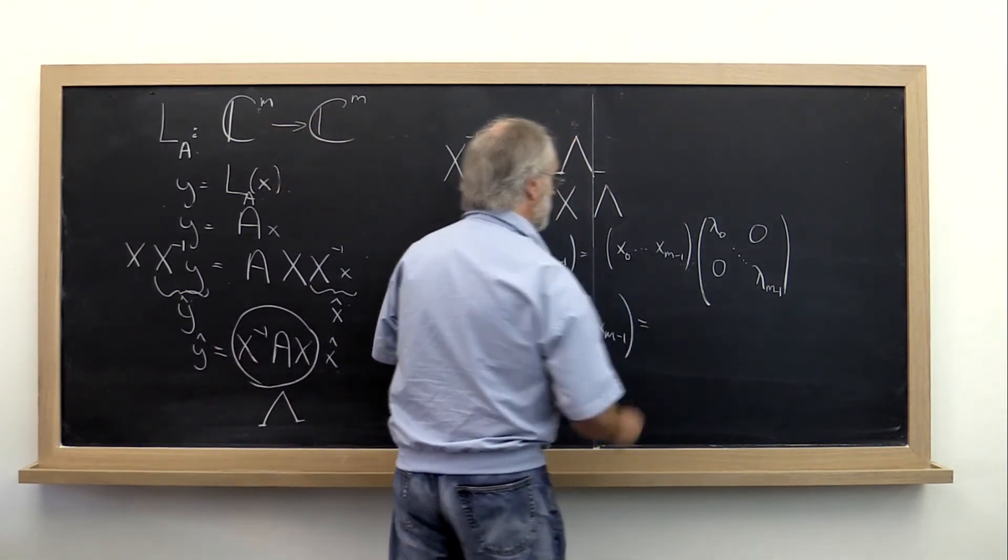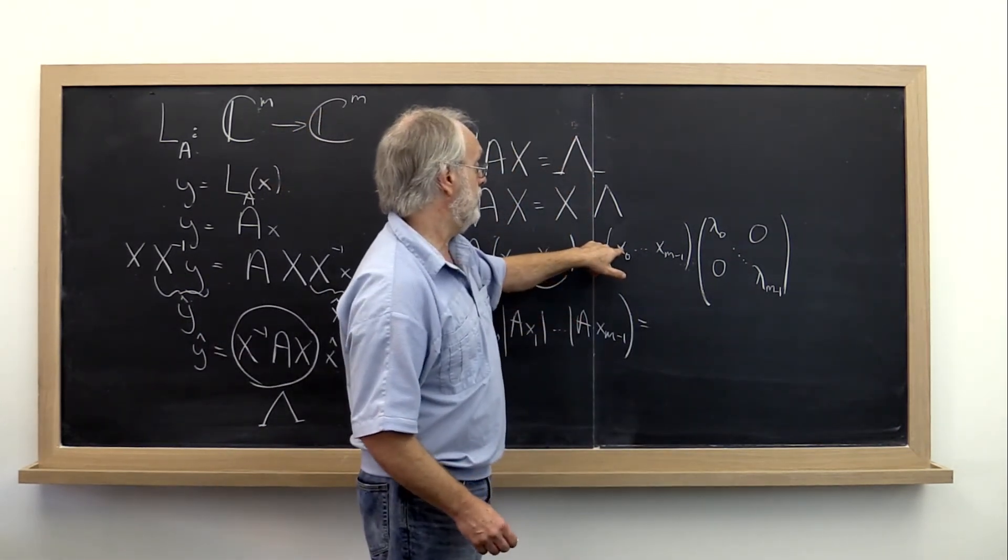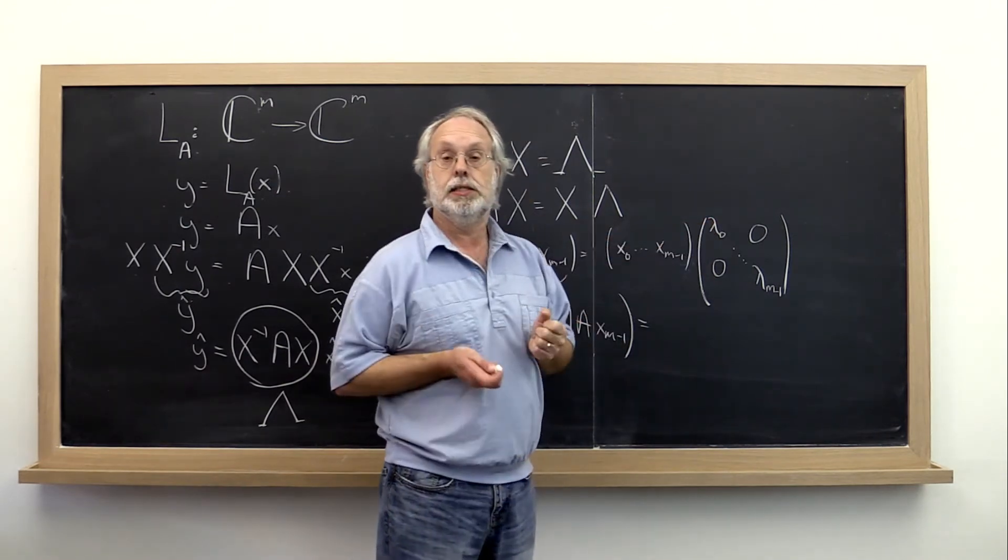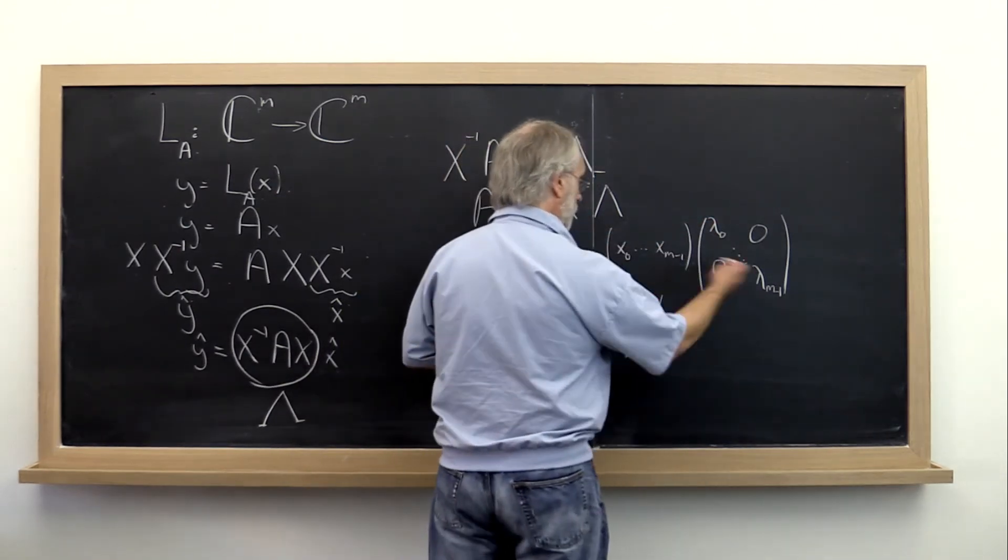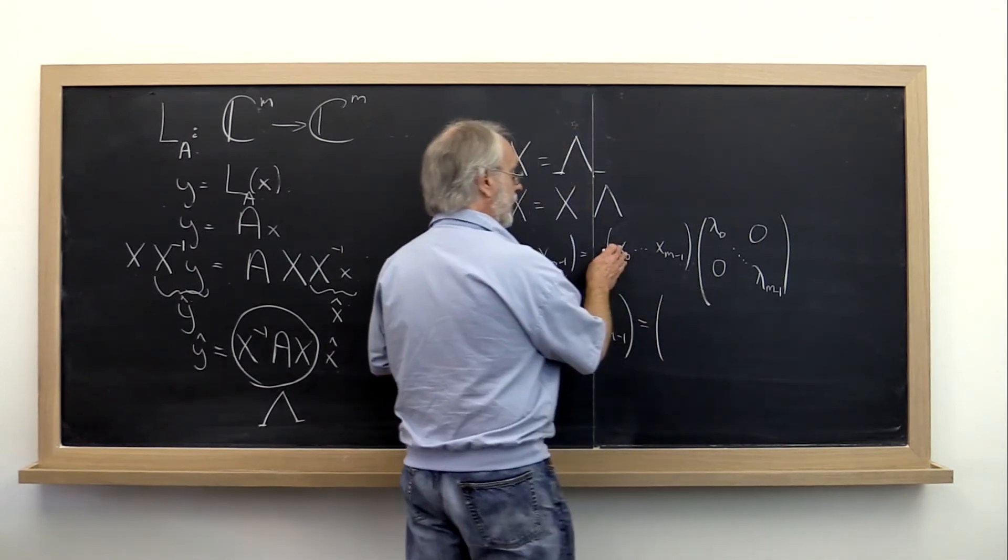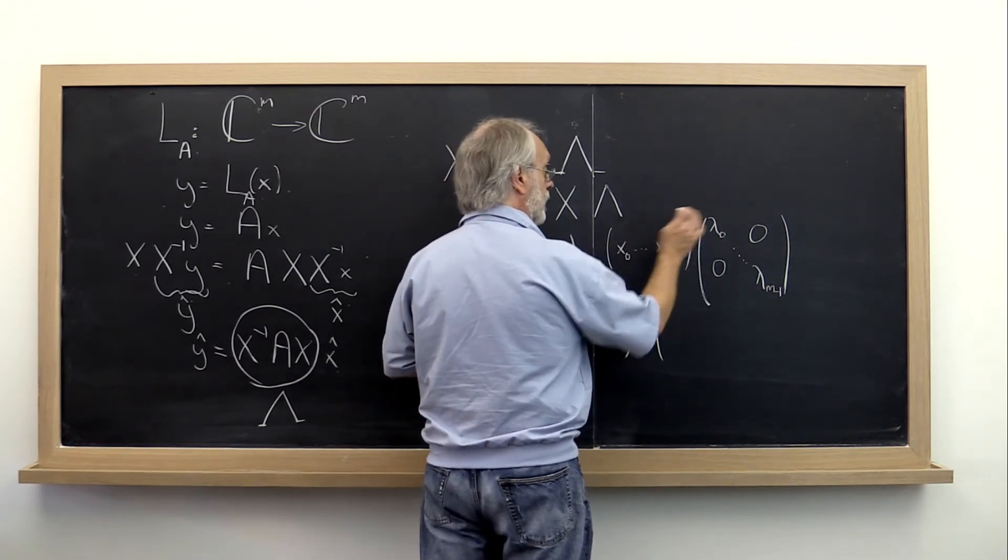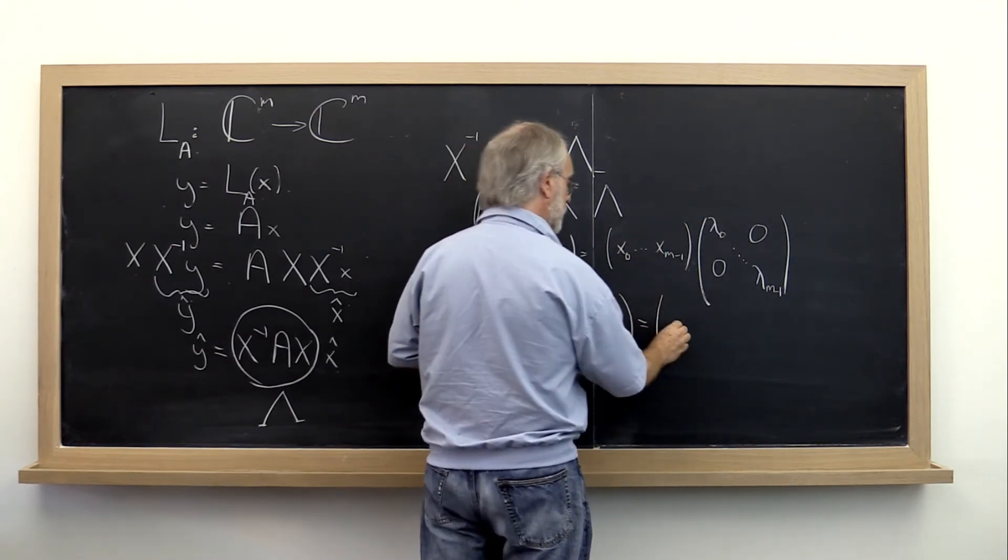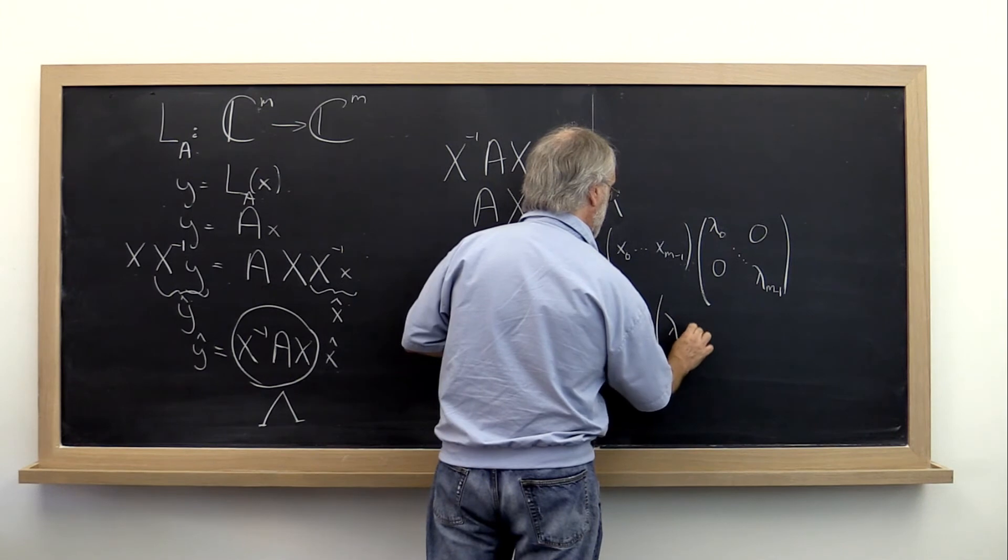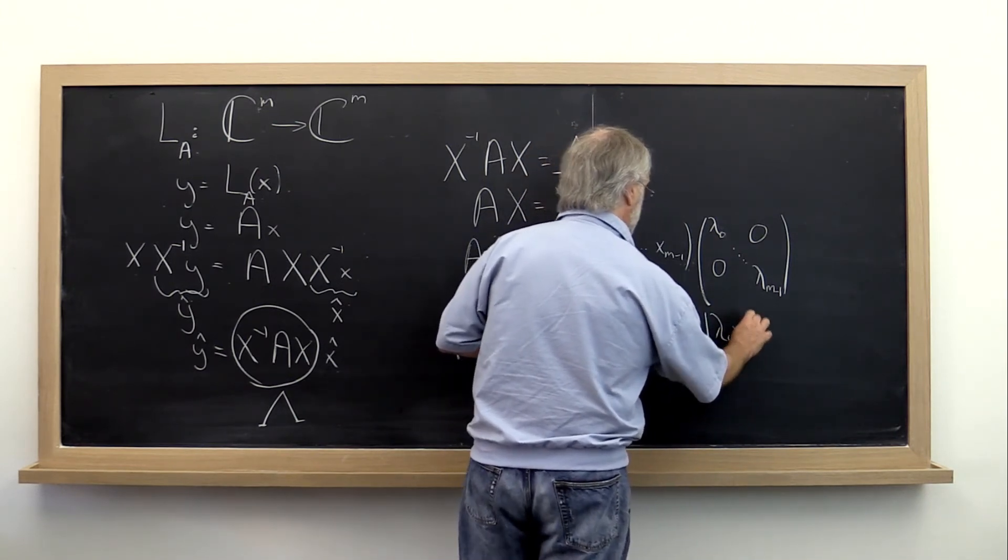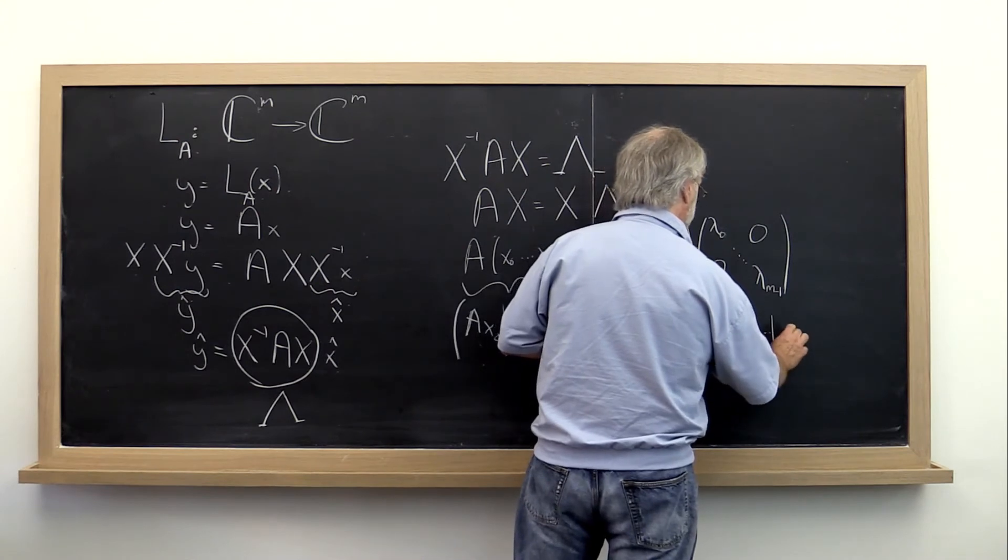On the right we see that the first column is this times that plus zero times blah blah blah. And therefore the first column on the right ends up being x0 times lambda 0. But notice that the vector times a scalar is the same as the scalar times the vector. So we get lambda 0 times x0, lambda 1, and times x1, and so forth.